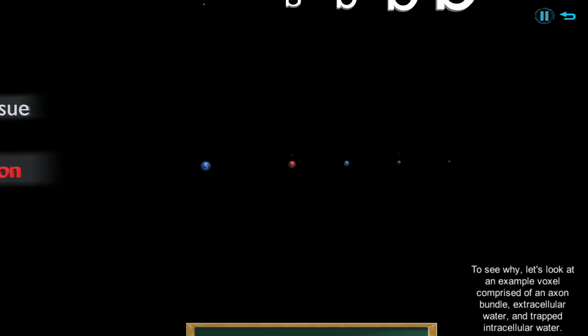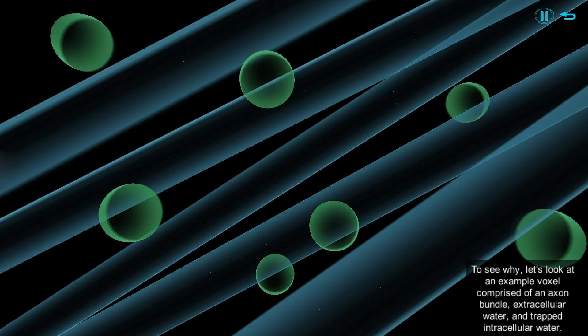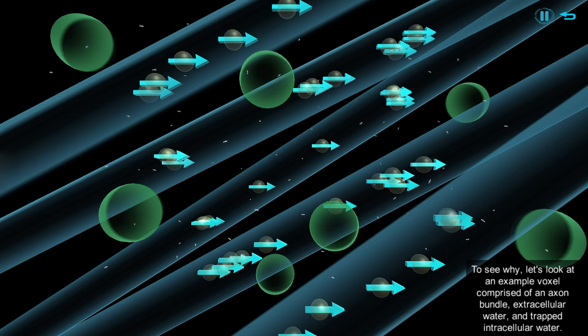To see why, let's look at an example voxel comprised of an axon bundle, extracellular water, and trapped intracellular water.